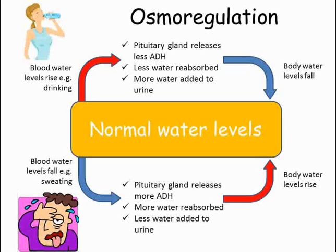Conversely, when water levels drop, more ADH is produced. This allows more water to be reabsorbed into the blood before it leaves the kidney, reducing the volume of urine being produced — crucially without affecting the amount of urea being removed from the blood. This negative feedback keeps water levels in the body at constant levels. This control of water is known as osmoregulation.